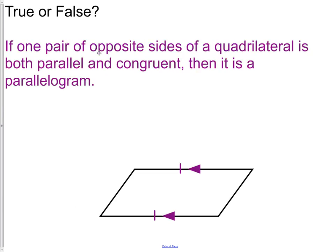True or false: if one pair of opposite sides of a quadrilateral is both parallel and congruent, then it is a parallelogram. Looking at the picture, that same pair of sides being both parallel and congruent will be enough to say that it is indeed a parallelogram. So that is a true statement.